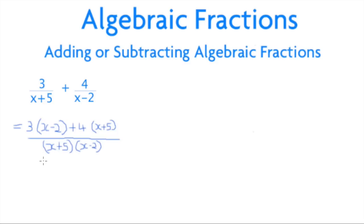Now it's simply a case of multiplying out the brackets on the top, giving us 3x - 6 + 4x + 20 over the same shared denominator we had before of (x+5) and (x-2) in their own respective brackets.